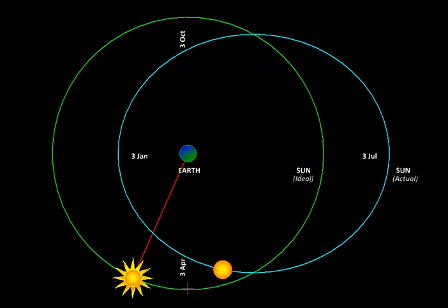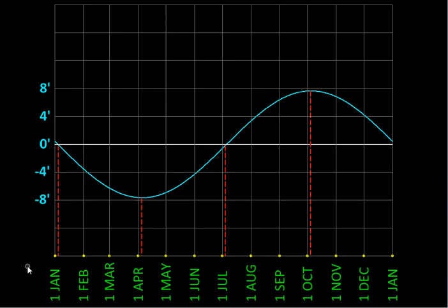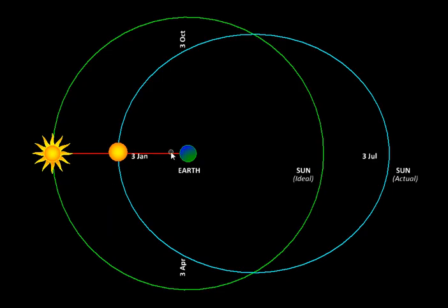And it is indeed a sinusoidal function. Let us actually look at the graph. So here is a graph. Let us start at about 3rd of January when the correction is 0. It is this position in our orbit where the two are aligned and there is no correction needed.